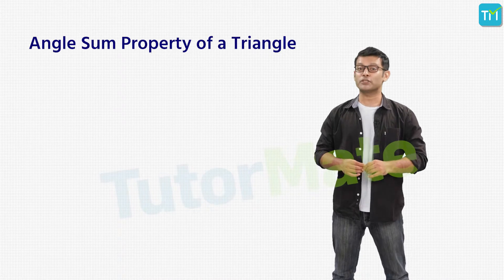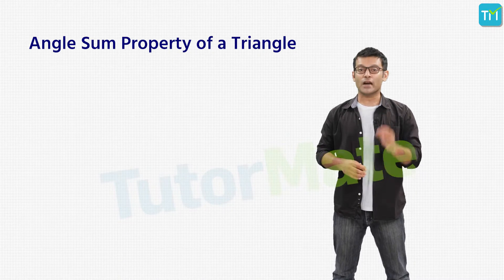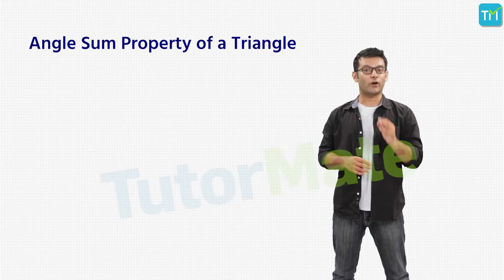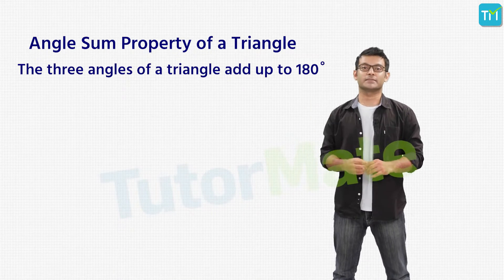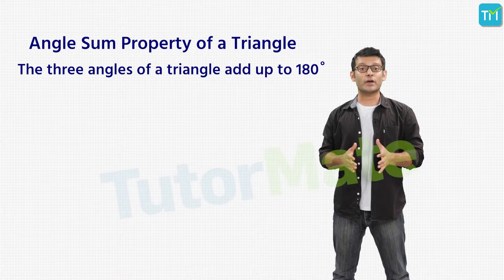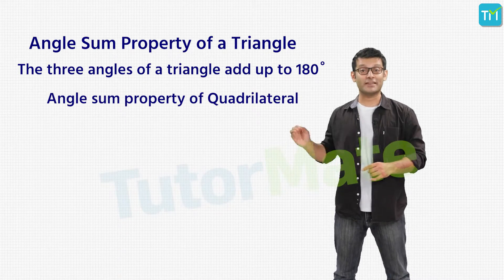So, we've all studied triangles, right? Do you recall the angle sum property of a triangle? Let me revise it for you. According to the angle sum property of a triangle, the three angles of a triangle add up to 180 degrees. Similarly, we also have an angle sum property for quadrilaterals. Let's look at it right now.